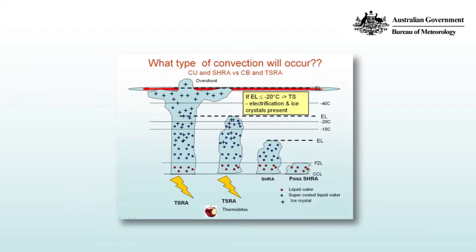It goes beyond the scope of thermodynamics to talk about the details, but in the real atmosphere water does not freeze entirely at zero degrees Celsius, so what we get is known as mixed-phase clouds — two phases of water: supercooled liquid water and ice. Between minus 15 and minus 20 you get efficient ice crystal production, and above that you get more and more ice crystals until above minus 40 degrees Celsius the cloud consists entirely of ice crystals.